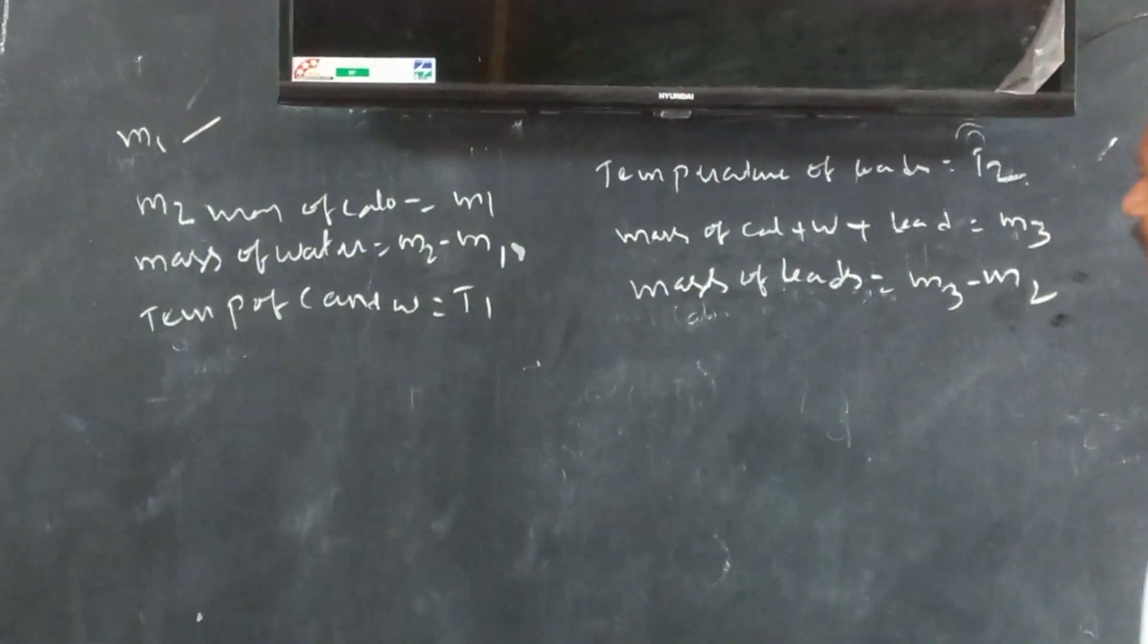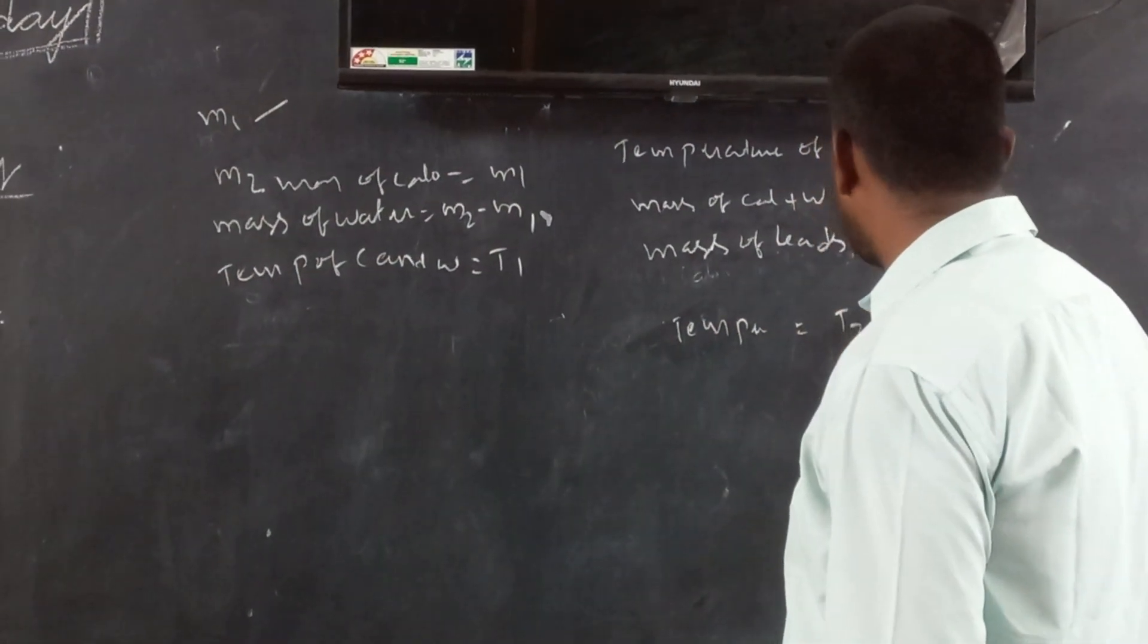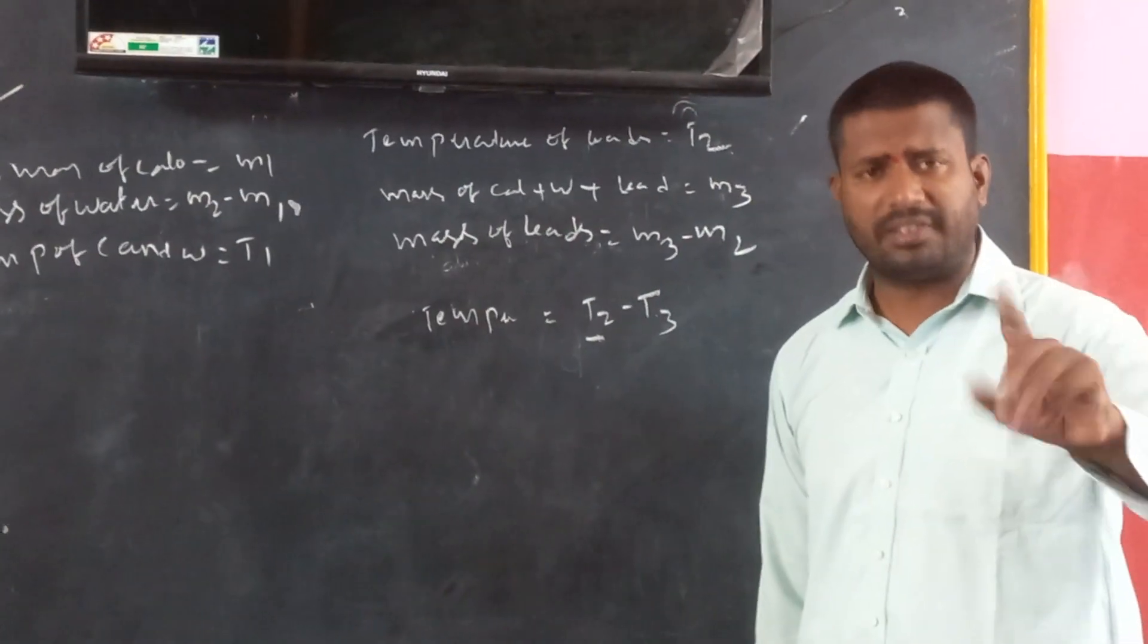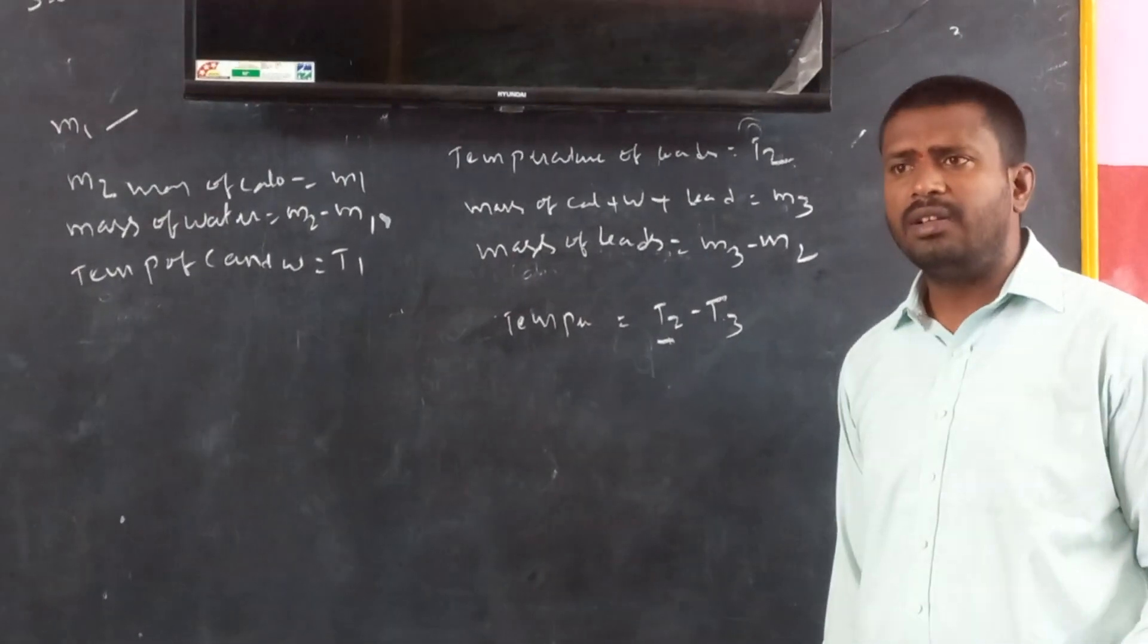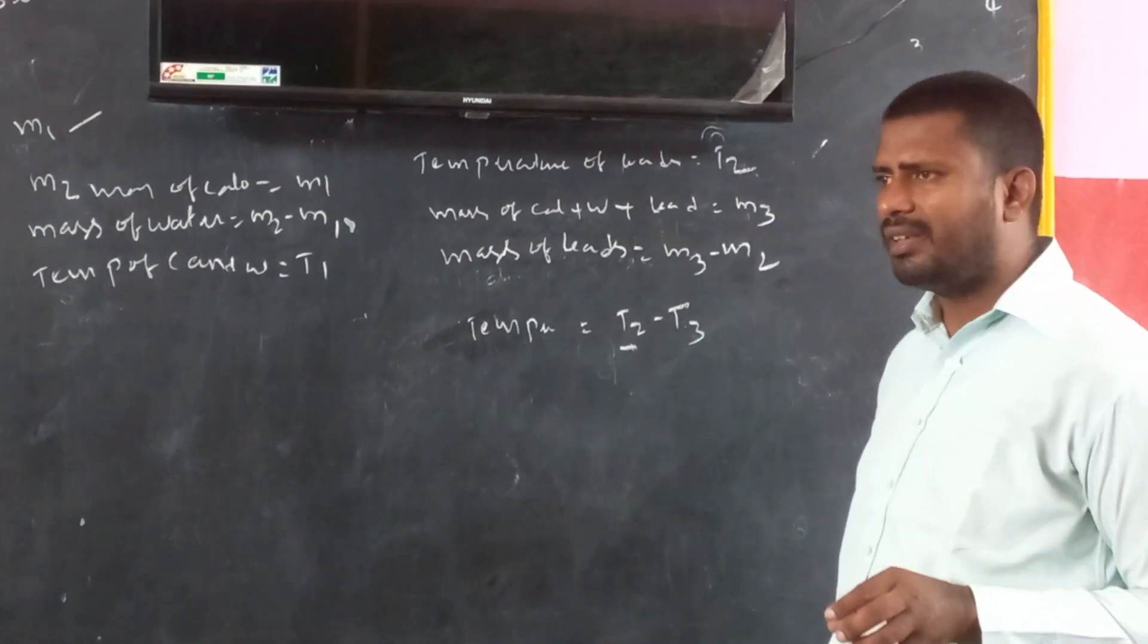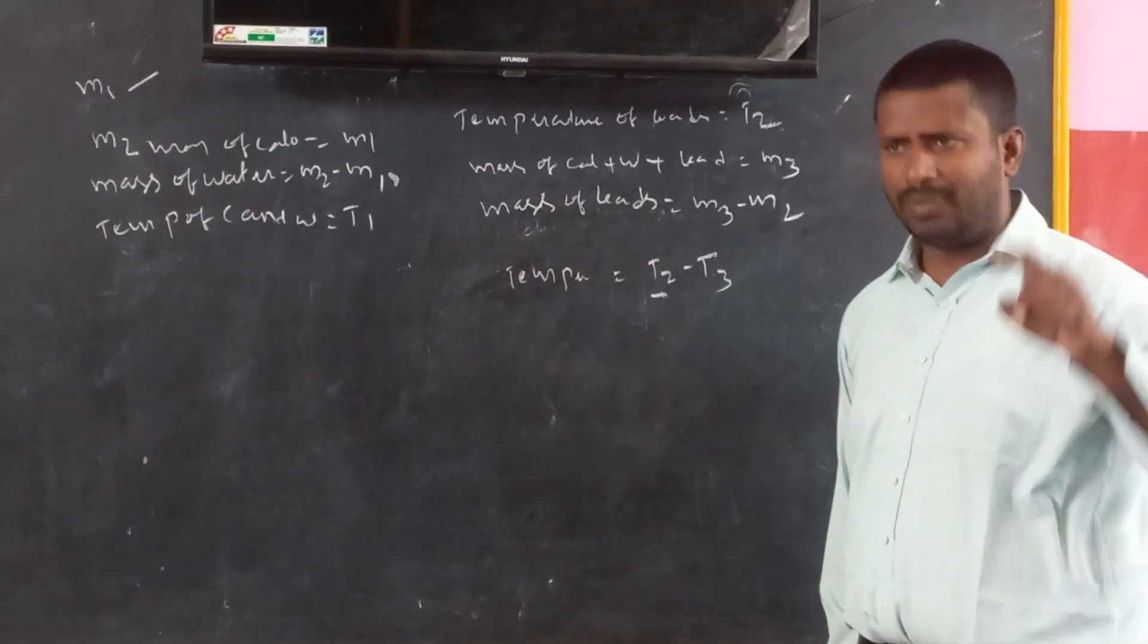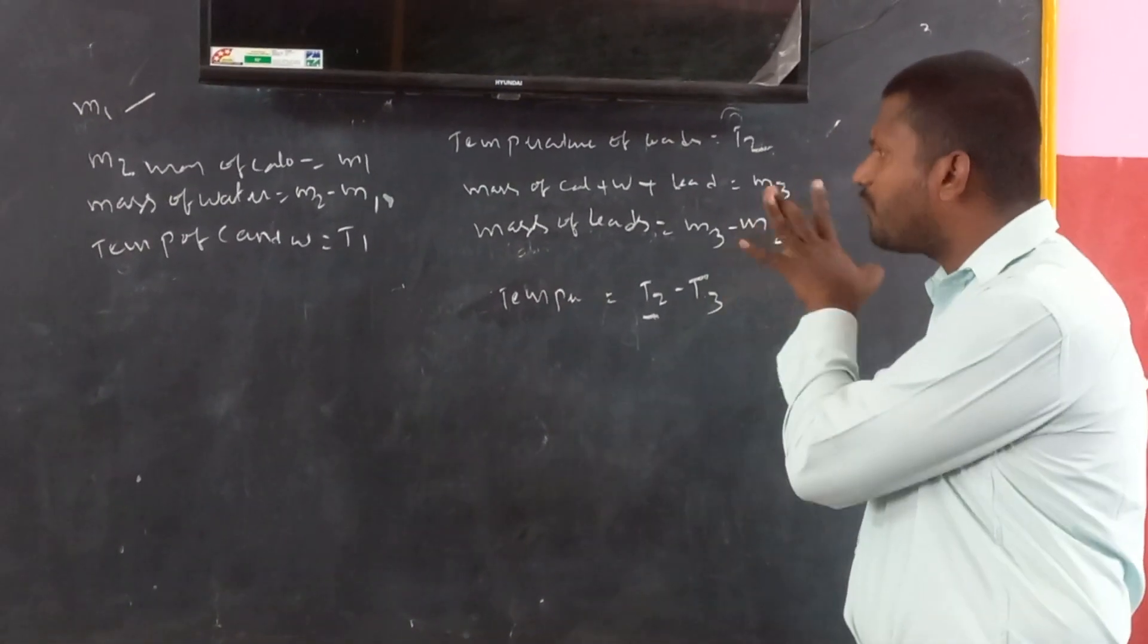Now, if you want to find out the temperature, the temperature of lead shots is T2 minus T3. Because, why we are saying T2? Initially, when we have heated lead shots, the maximum temperature is T2. When we transfer the lead shots into the calorimeter and water, the temperature is T3. Always, the maximum temperature is, the resultant temperature is maximum temperature minus minimum temperature. The maximum temperature is T2. The minimum temperature is T3. So, T2 minus T3 is the final temperature for lead shots.